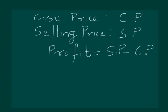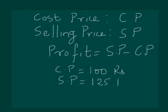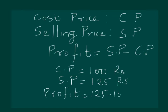Let us try and understand with an example. Let's buy a pencil at the cost price of 100 rupees. We sell the same pencil at the rate of 125 rupees. Notice that the selling price of 125 rupees is greater than 100 rupees, which was the cost price. So we have gained a profit. To calculate the profit: profit is equal to 125 minus 100, which equals 25 rupees.